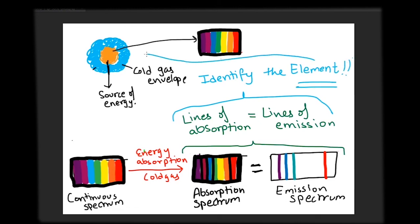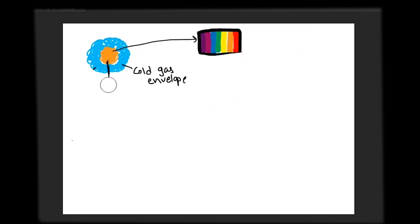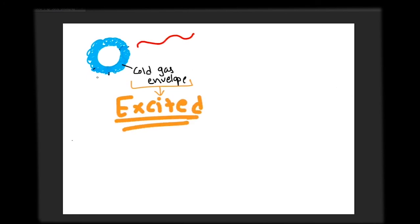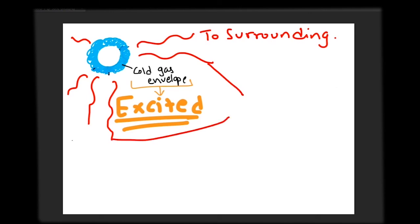Hence, the absorption spectrum can also help identify the element in the cold gas. Remember that once the heat source is removed, the cold gas which is now excited and hotter compared to the surrounding without the heat source will return back